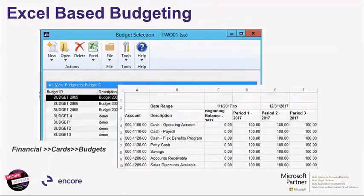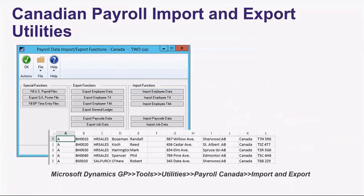Similarly, Excel-based budgeting lets you build budgets in GP with a nice wizard. Export the budget to Excel, choose your default amounts — adjust up five percent from last year or however you want — then do all your real budgeting work in Excel: make adjustments, leave notes, pass the spreadsheet around to departments for feedback. At the end, import it back and it populates all your budget amounts in GP. For Canadian clients, the Canadian payroll import/export utilities let you work in Excel — export and import pay codes, job data, and more.